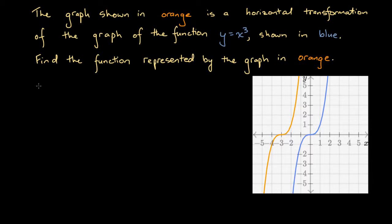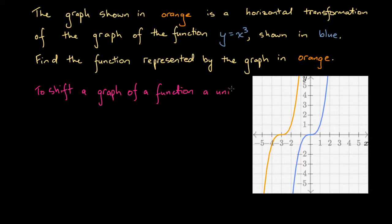To solve this, it's good to remember the rules for shifting functions left and right — horizontal transformations. To shift a graph of a function a units to the left, where a is some number, replace x with x plus a in the original function.